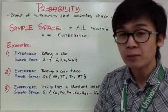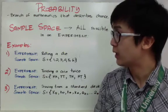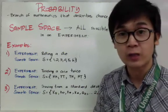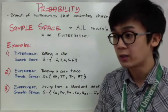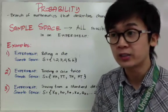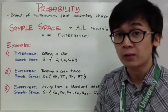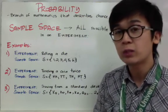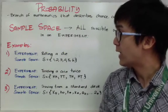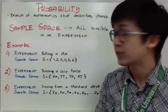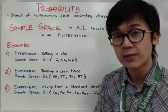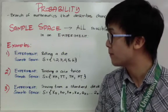In probability, experiments are things like rolling a die, flipping a coin, or using a standard deck of cards. Those are the types of experiments we will use in this chapter. I have here some examples of experiments and how to find the sample space for each.